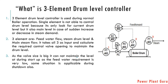The three-element level control looks after all inputs, outputs, and the current drum level — specifically, the rate of feed water coming in, the rate of steam going out from the boiler, the current drum level, and also the rate of change in those parameters. Based on those rates of change, it calculates and gives a set point to the feed water controller.